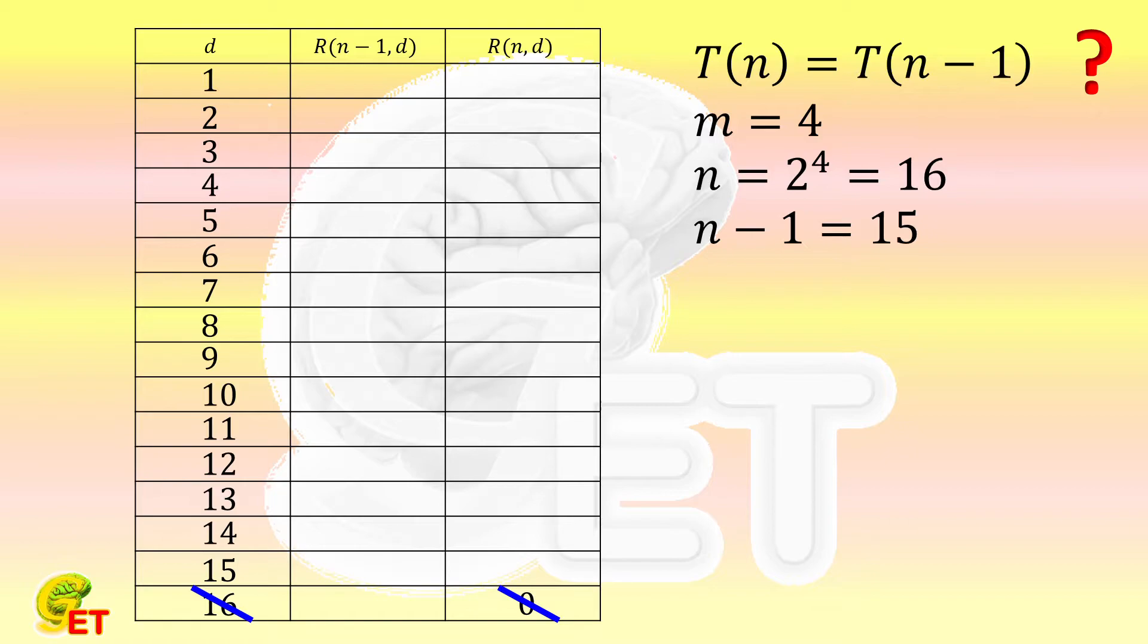We first write down the remainder of 15 divided by 1 to 15. The remainder of 15 divided by 1 is 0, by 2 is 1, by 3 is 0, and so on, until by 15 and the remainder is 0. Then the remainder of 16 divided by 1 is 0, by 2 is 0, by 3 is 1, until by 15 the remainder is 1.